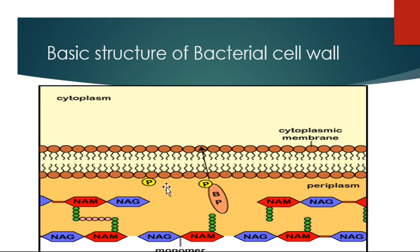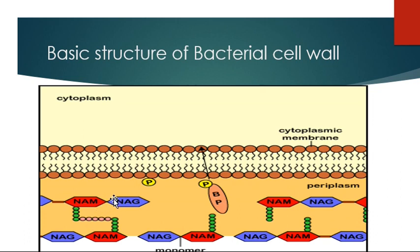The periplasmic space is the space between cell membranes. The importance of this point is that penicillin and cephalosporin act here — when they act on that point, there is no cross-linking between NAM and NAM, or between NAM and NAG. When there is no cross-linking, there is no proper cell wall. Penicillin and cephalosporin inhibit the transpeptidase enzyme, so transpeptidation never occurs and the peptidoglycan chain is not formed.